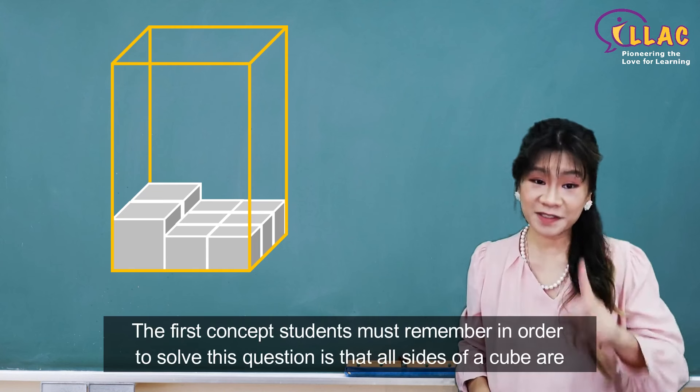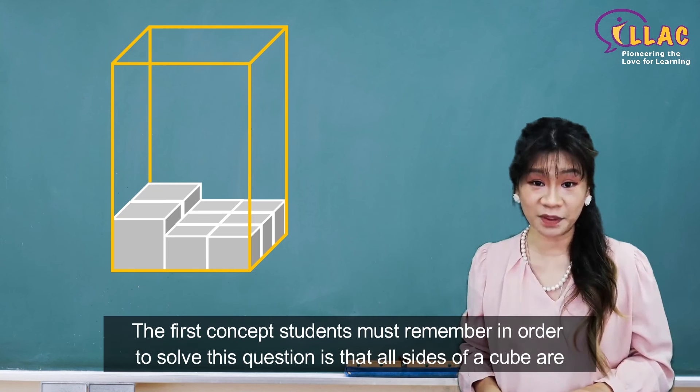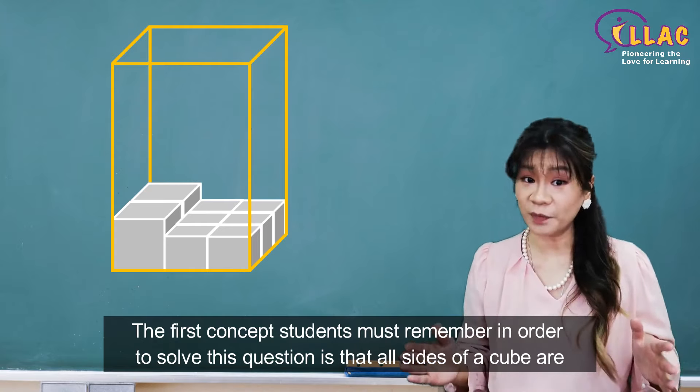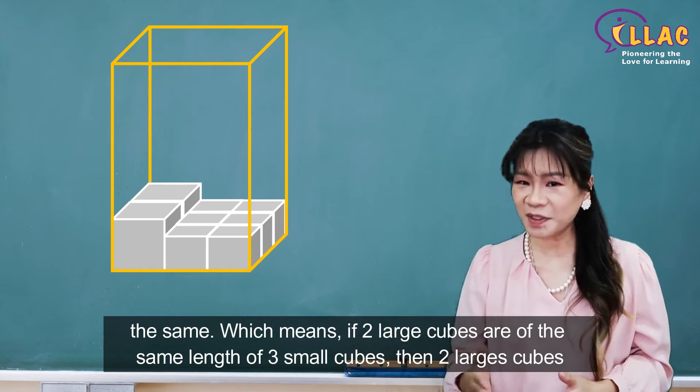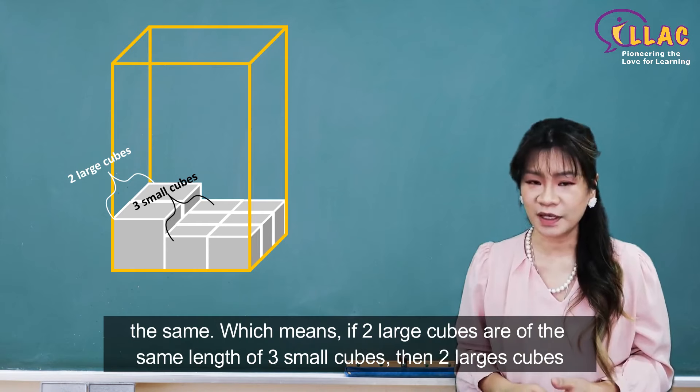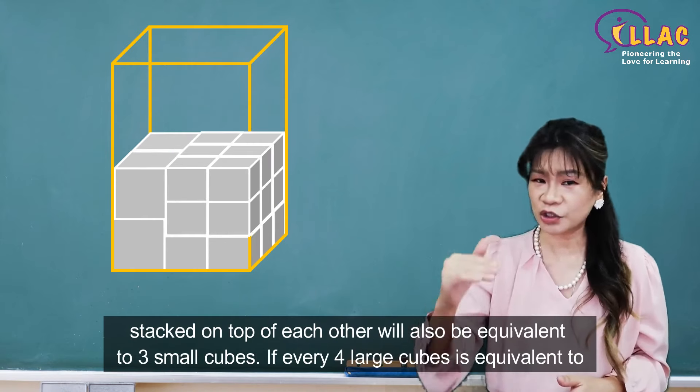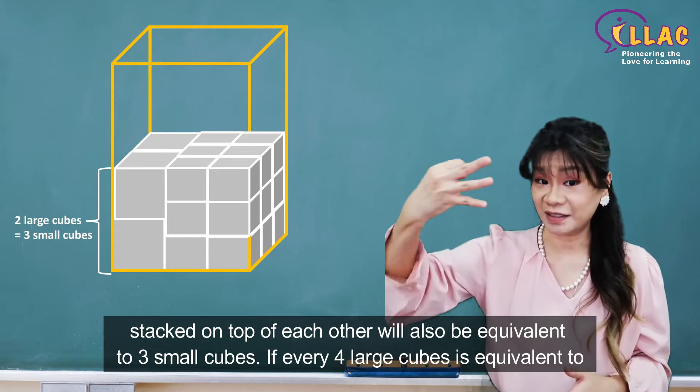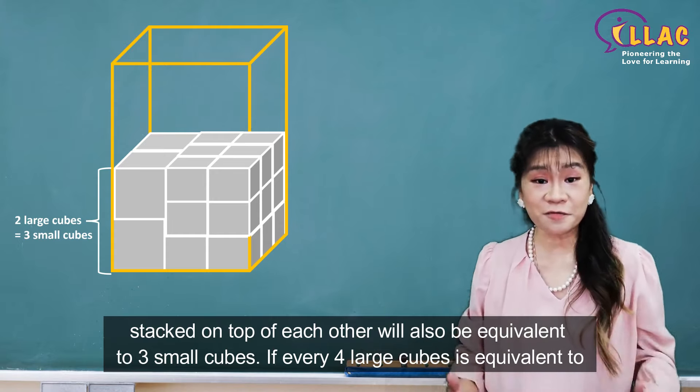The first concept students must remember in order to solve this question is that all sides of a cube are the same. Which means if 2 large cubes are of the same length of 3 small cubes, then 2 large cubes stacked on top of each other will also be equivalent to 3 small cubes.